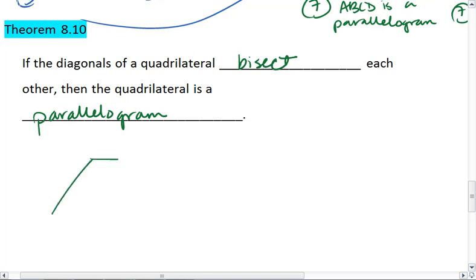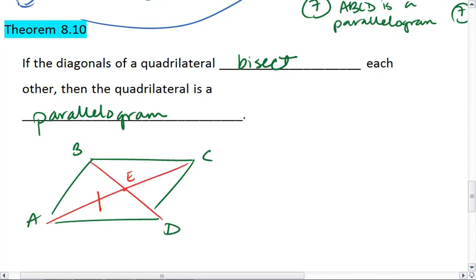Meaning, if I have a quadrilateral with its two diagonals such that AE is congruent to EC and BE is congruent to ED, then my quadrilateral must be a parallelogram.